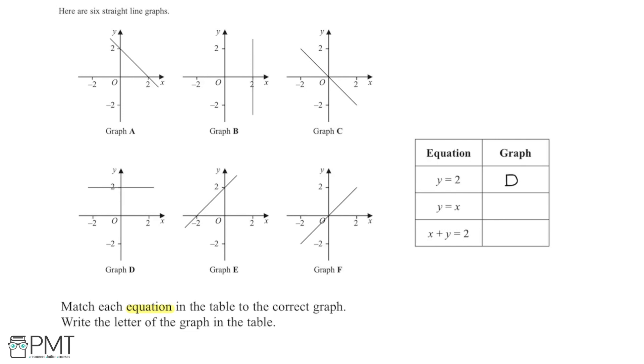If y is 1, x is 1. If y is -2, x is -2. That means we're going to get a diagonal line through the origin. We've got two examples here: Graph C and Graph F.